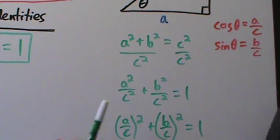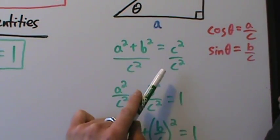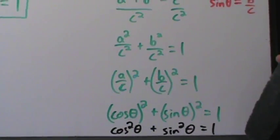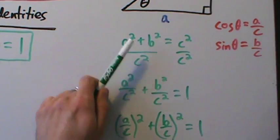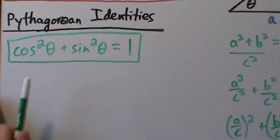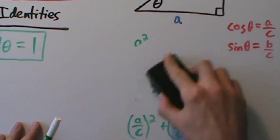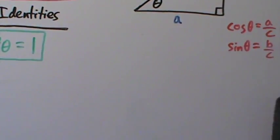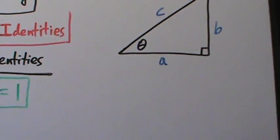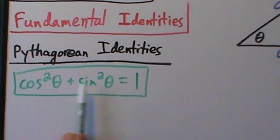So this is one of the Pythagorean identities. As long as you remember this one and just remember some basic algebra techniques, you can get the other two. We could go back to the equation a² + b² = c² and divide by a² or b² instead, but let's use this identity directly — that way we don't have to worry about right triangles anymore.